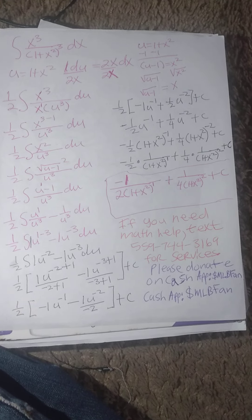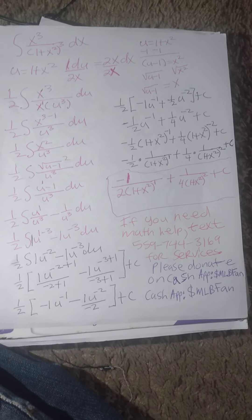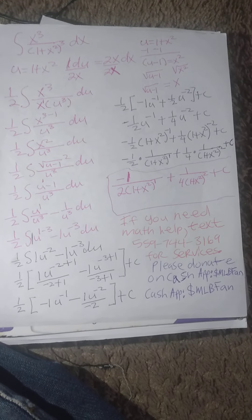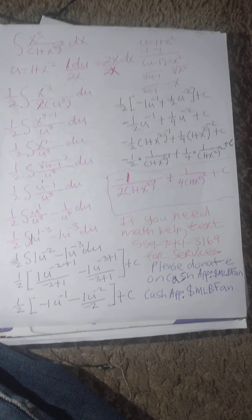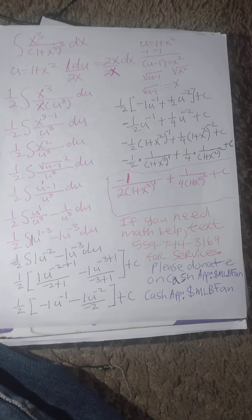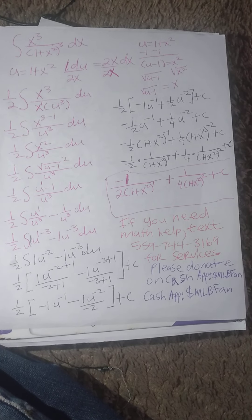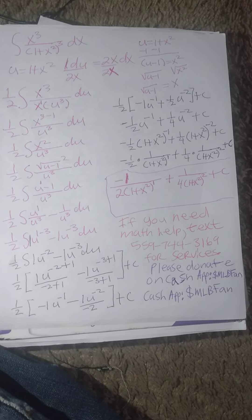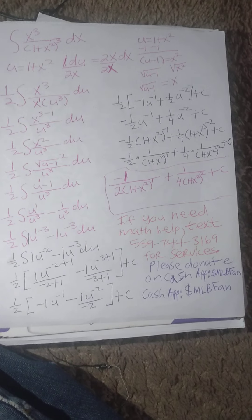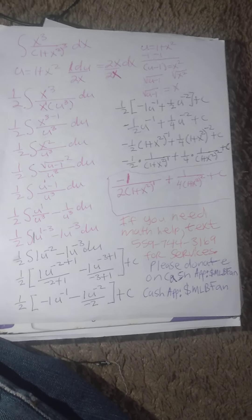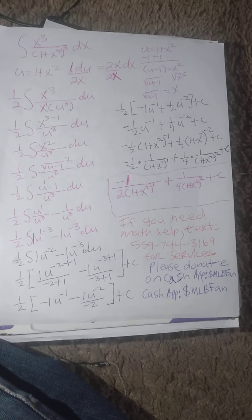So then divide both sides by 2x and place 1 in front of du to represent 1 times du is equal to du, because we want to be able to see the fraction that we need to pull out — 1 half.